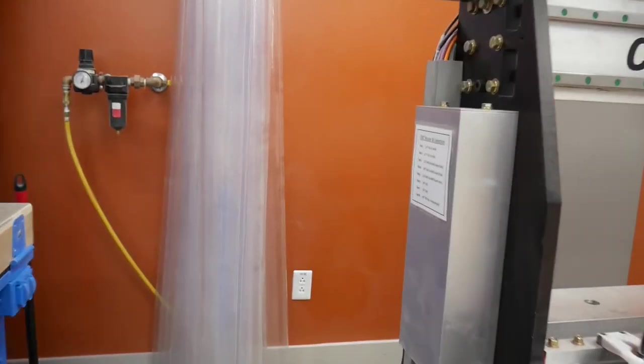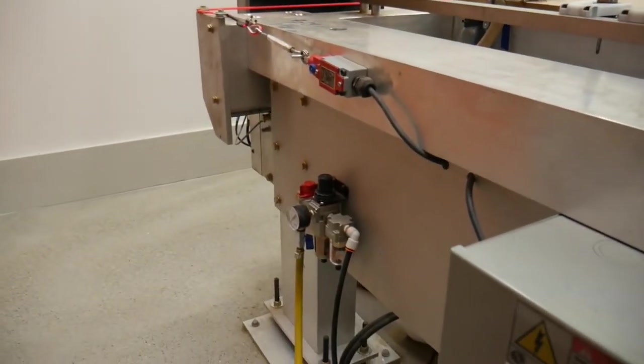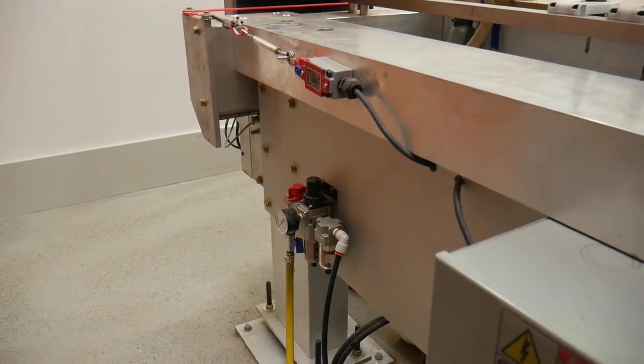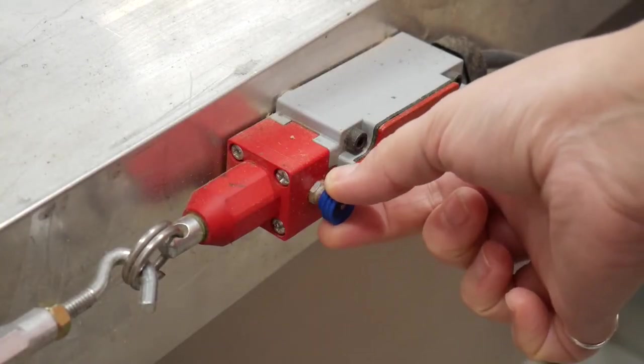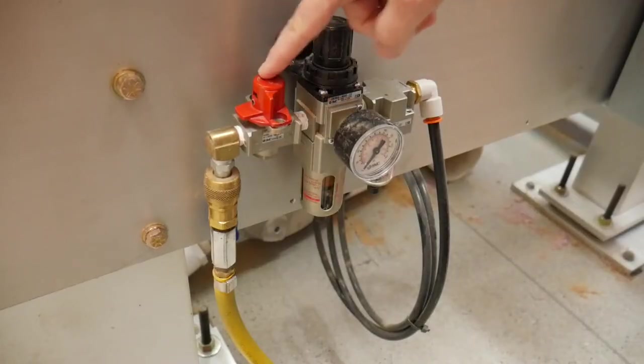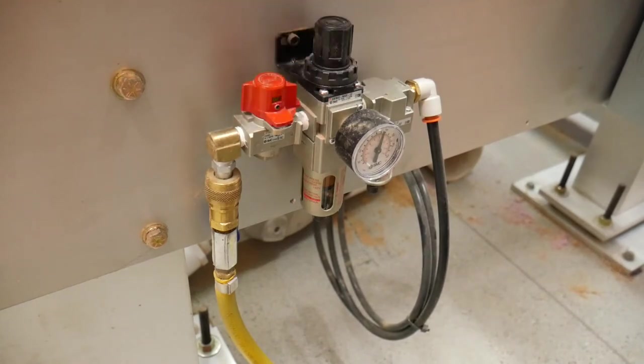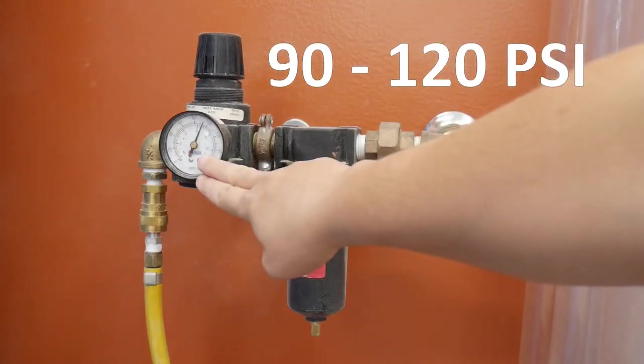If we look behind the CNC router, we'll find the machine's pneumatic regulator as well as the emergency trip line release. To reset the emergency trip line, hold the blue tab. To turn on the air, turn the red valve located on the pneumatic regulator. Check that the main wall regulator reads between 90 and 120 psi.